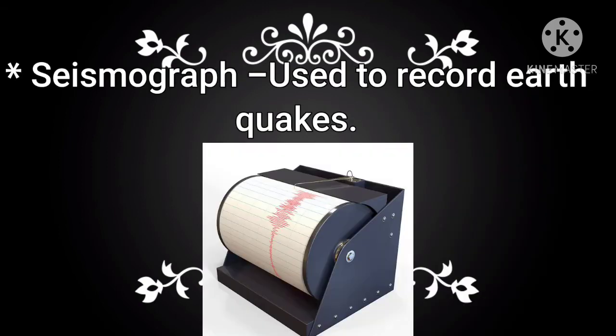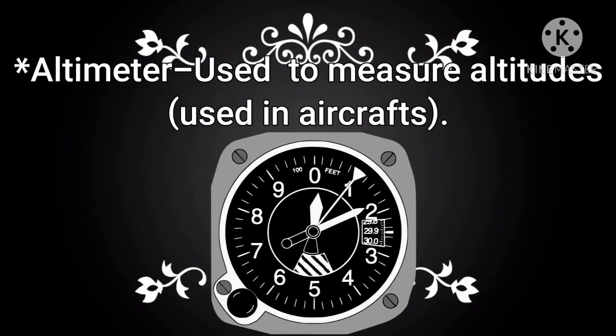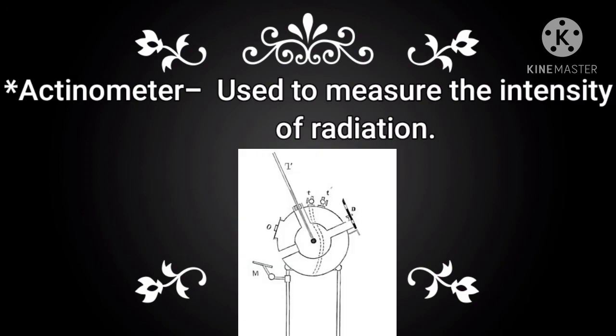Seismograph: used to record earthquakes. Sphygmomanometer: used to measure blood pressure. Altimeter: used to measure altitudes, used in aircrafts. Actinometer: used to measure the intensity of radiation.